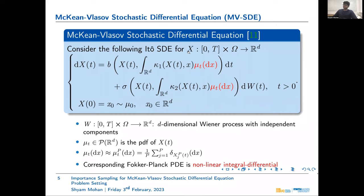Consider the process X, which follows the McKean-Vlasov SDE and is a D-dimensional process. It is a special class of SDEs whose drift and diffusion coefficients depend on the probability distribution of the solution itself, denoted by mu_T. The initial conditions are also random. There have already been some nice works which prove the existence and uniqueness of solutions to such an equation.